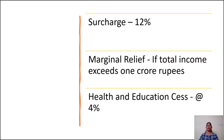Health and Education Cess is levied on the amount of income tax and surcharge at the rate of 4%. Note: from the assessment year 2021-22, resident cooperative societies have an option to opt for taxation at the rate of 22% under newly inserted Section 115BAD of the Act.